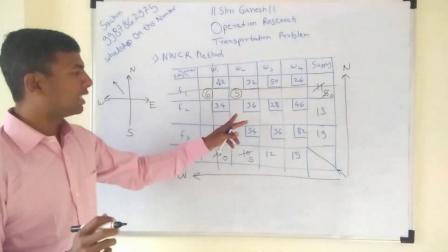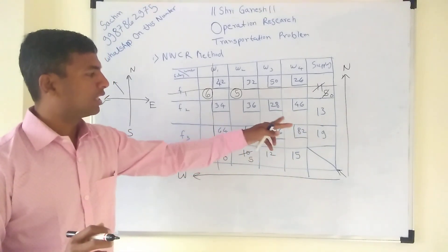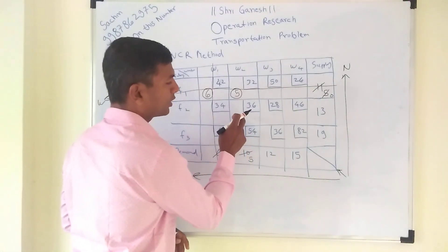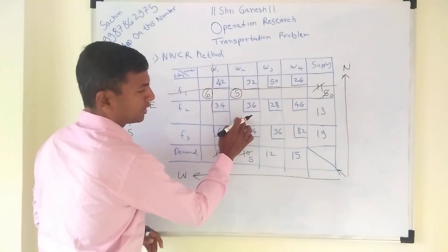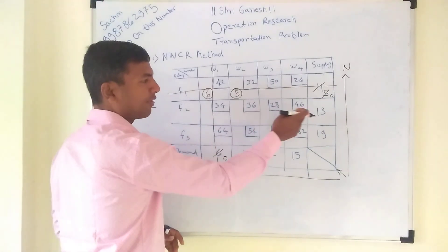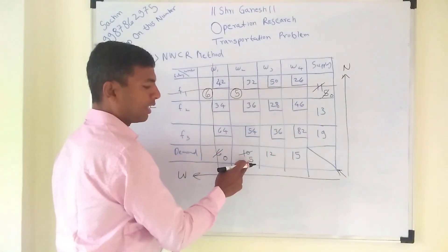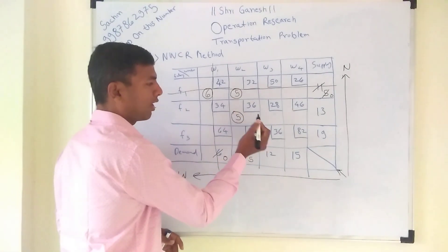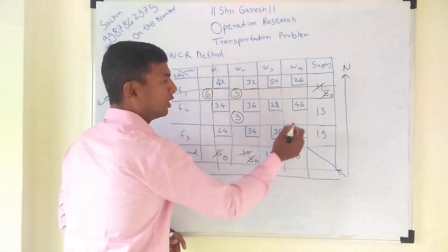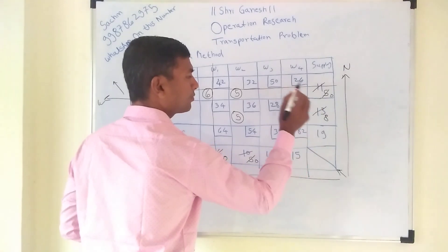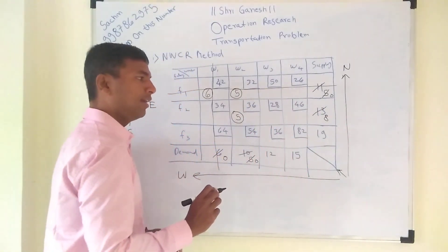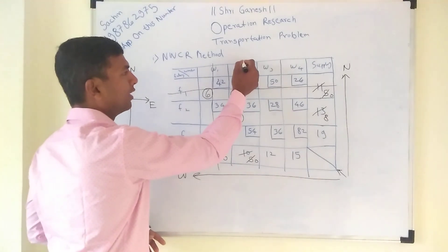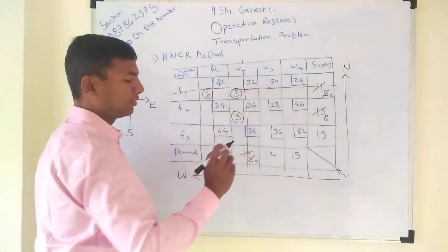Now you can see that only a 3 by 3 matrix is remaining. Again, find the top-most North-West corner. The top-most is 36, having a supply of 13 and demand of 5. The smallest one is demand, which is 5. Write 5 in that cell — demand becomes 0, supply becomes 8. Warehouse 2 is done with their demand, so you have to cancel that.